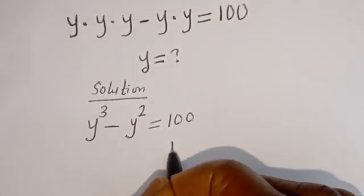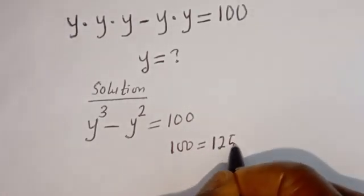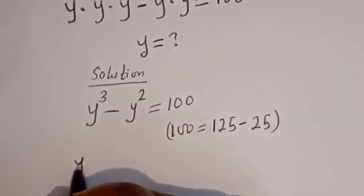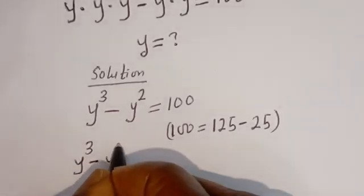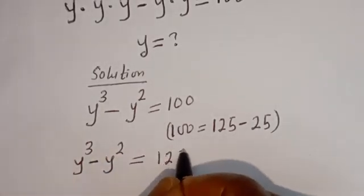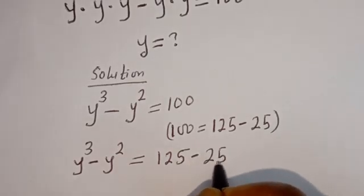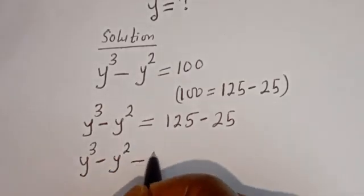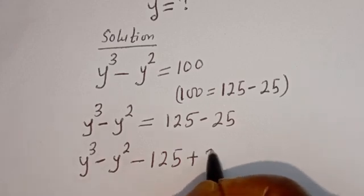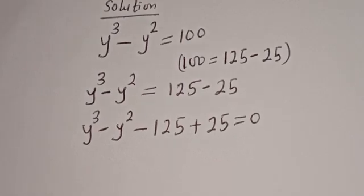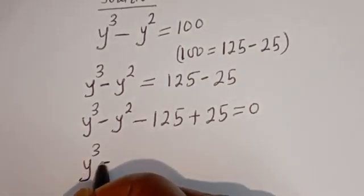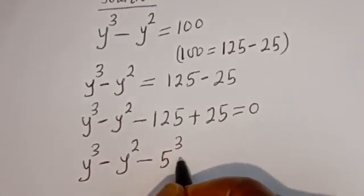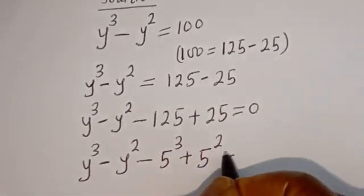But 100 is equal to 125 minus 25. So we have Y to the power of three minus Y squared is equal to 125 minus 25. Then Y to the power of three minus Y squared minus 125 plus 25 is equal to 0. And 125 can be written as 5 to the power of three, and 25 can be written as 5 squared, so the equation equals 0.